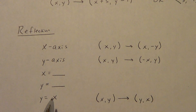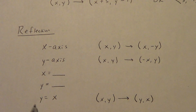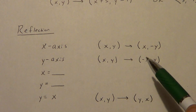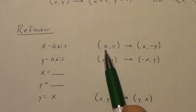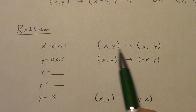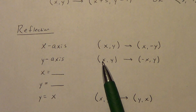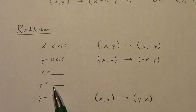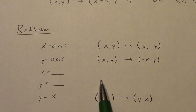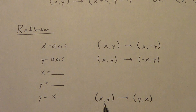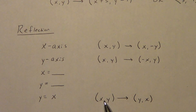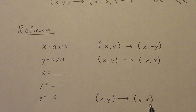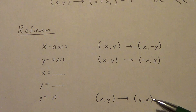We could also do a reflection in the line y equals x — we don't do that as often, and it is a little harder. We could do other lines like y equals 2x minus 1, but that gets more difficult, so we'll focus primarily on y equals x. Using the arrow notation: for the x-axis, the x-value stays the same and the y-value changes its sign. For the y-axis, the x-value changes its sign but y stays the same. For y equals x, the original x-value becomes the new y-value — so a point like 4 comma 2 becomes 2 comma 4. You don't have to memorize all this, just understand it could be written that way.